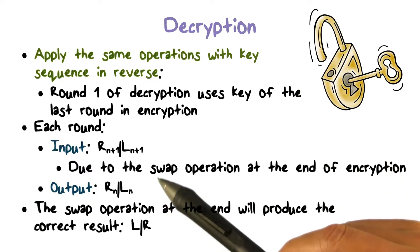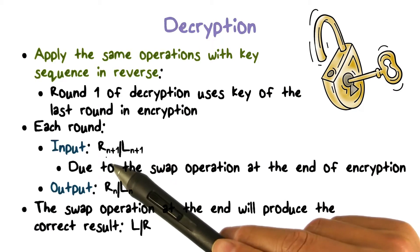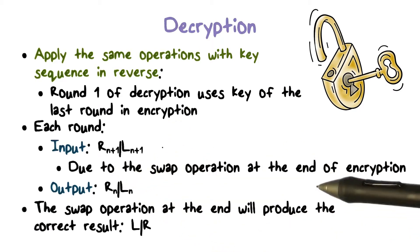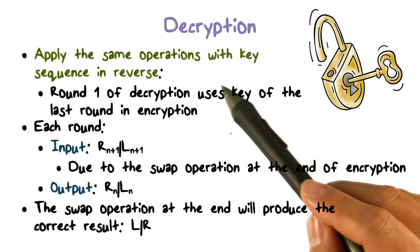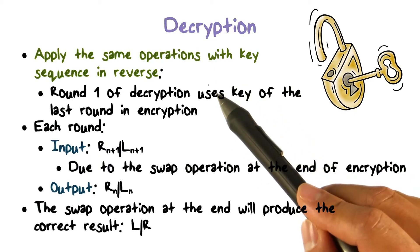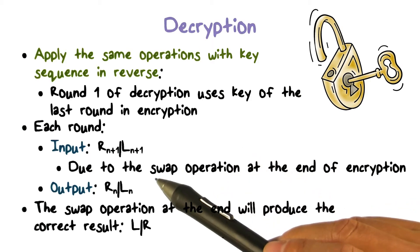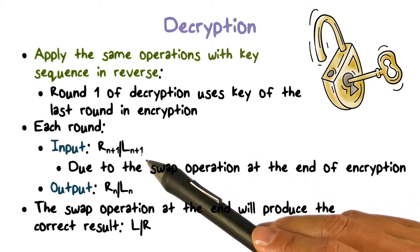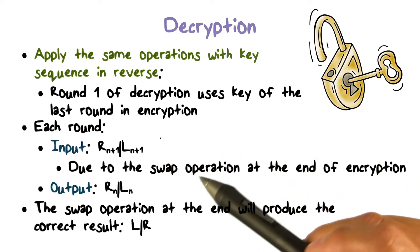For example, the input to the first round of decryption would be R16 and L16, because encryption has 16 rounds. And because we are using the key sequence in reverse in decryption, the key used in the first round of decryption is the key used in the 16th round of encryption.